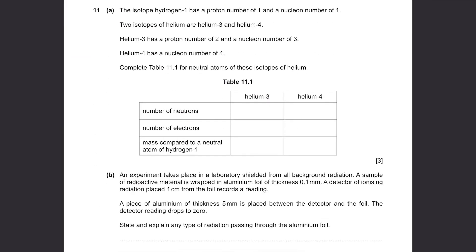Question 11 part A. The isotope hydrogen-1 has a proton number of 1 and a nucleon number of 1. Two isotopes of helium are helium-3 and helium-4. Helium-3 has a proton number of 2 and a nucleon number of 3. Helium-4 has a nucleon number of 4. Complete table 11.1 for neutral atoms of these isotopes of helium. One thing to note is that a nucleon number is made of the number of protons and neutrons. It's given that helium has 2 protons and a nucleon number of 3, so the number of neutrons will be 1. Also these are neutral atoms, so the number of protons should equal the number of electrons, so it's also 2 for helium-3. Then the mass compared to hydrogen-1. The nucleon number of hydrogen-1 is 1 and for helium-3 it's 3. Just write 2 more because there are 2 more nucleons.